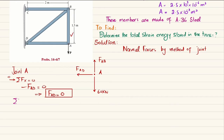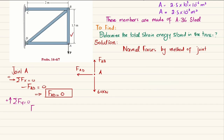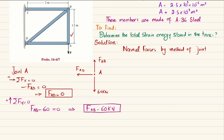Applying the second equilibrium equation: the sum of all forces along the y-direction equals zero, with upward forces taken as positive. F_AB minus 60 kN equals zero, so F_AB equals 60 kilonewtons.